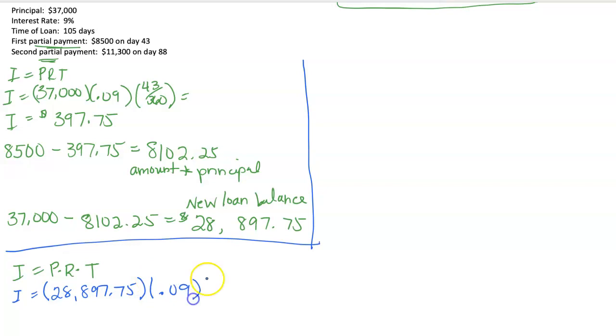Our new principal is the $28,897.75. The rate was 9%. And our time we need to calculate, we're going from day 43 to day 88. And I end up getting 45 days. So 45 days out of 360. And that gives me an interest of $325.10.